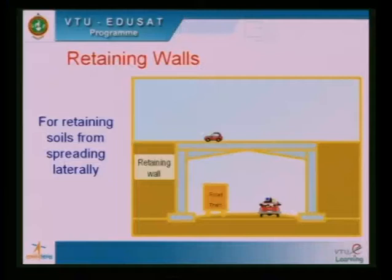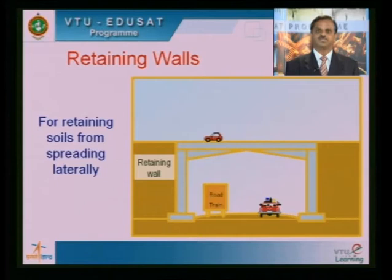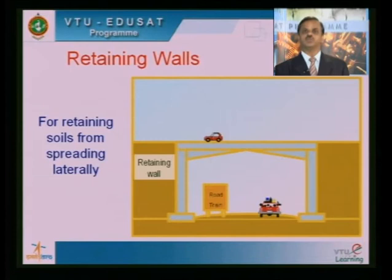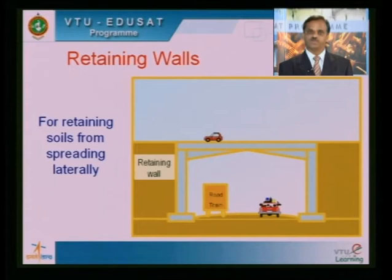Then you have the problem of retaining walls. You need to retain earth at two different levels — for highways, swimming pools, and basic structures. Earth on one side exerts a pressure on the wall, and you need to design the wall to take the lateral load from earth. As a geotechnical engineer, you decide how much lateral load the structure will experience, and the calculations depend on the type of soil.